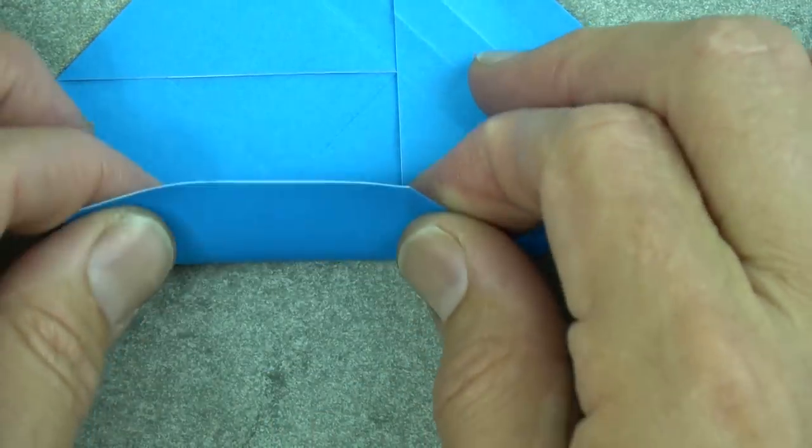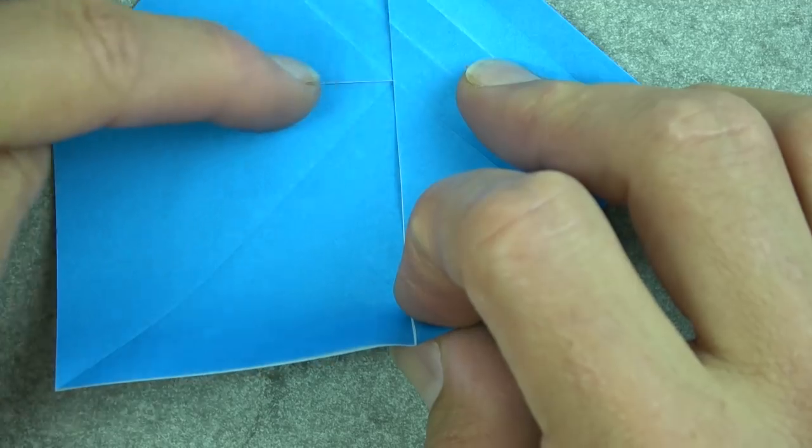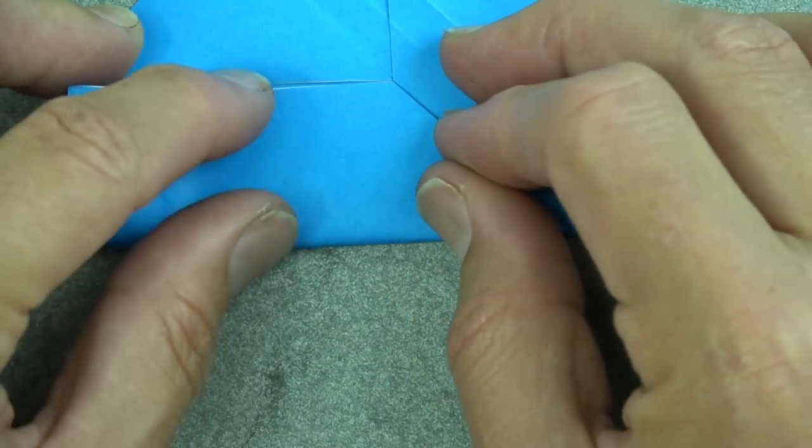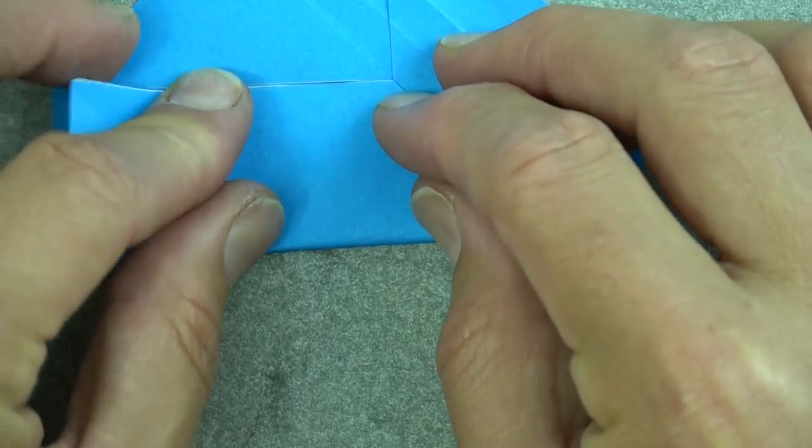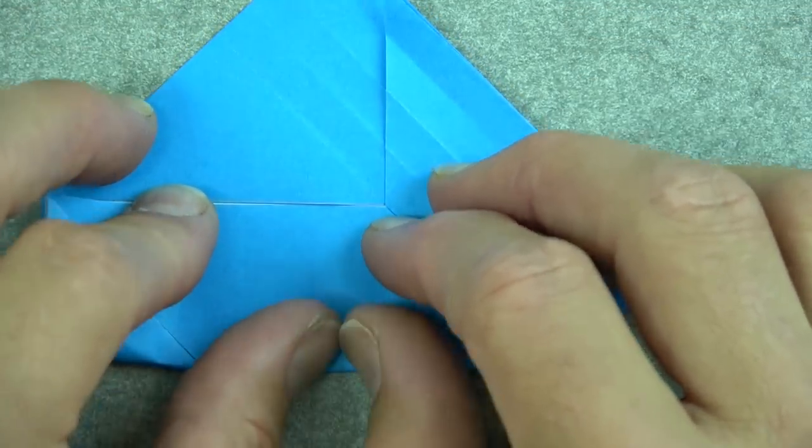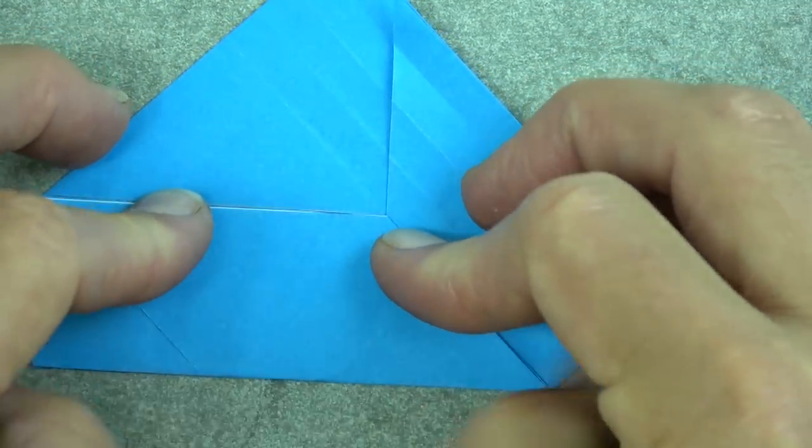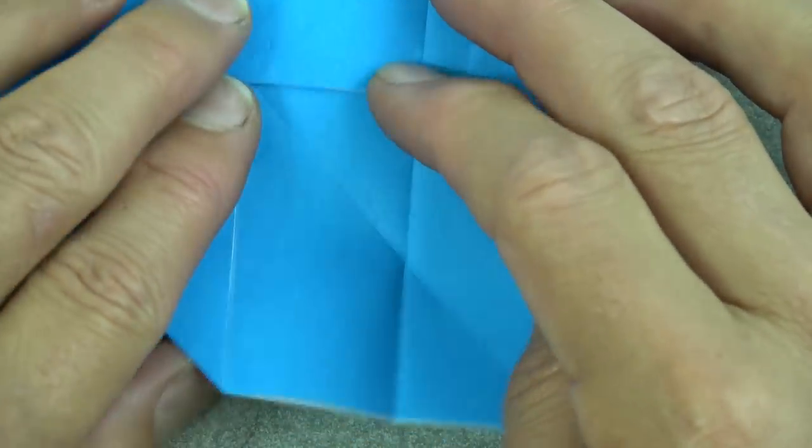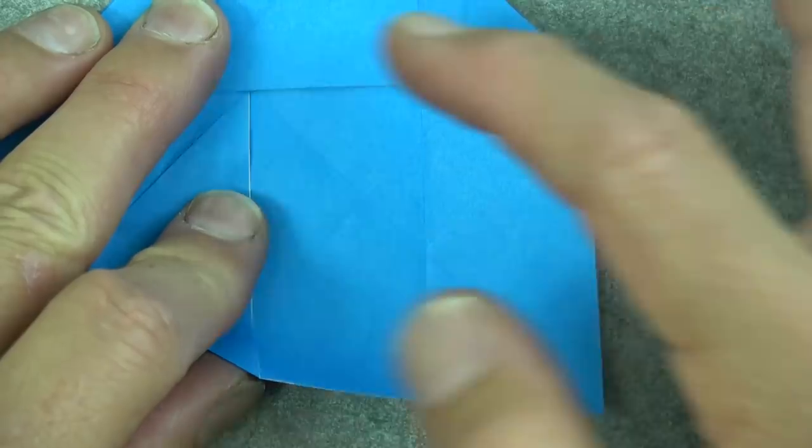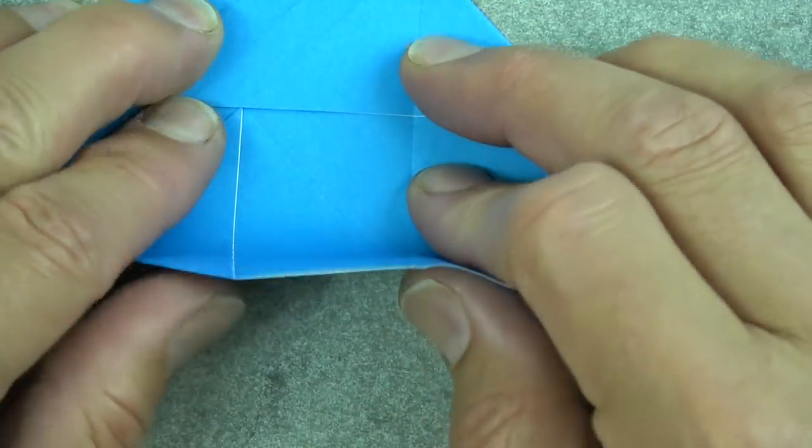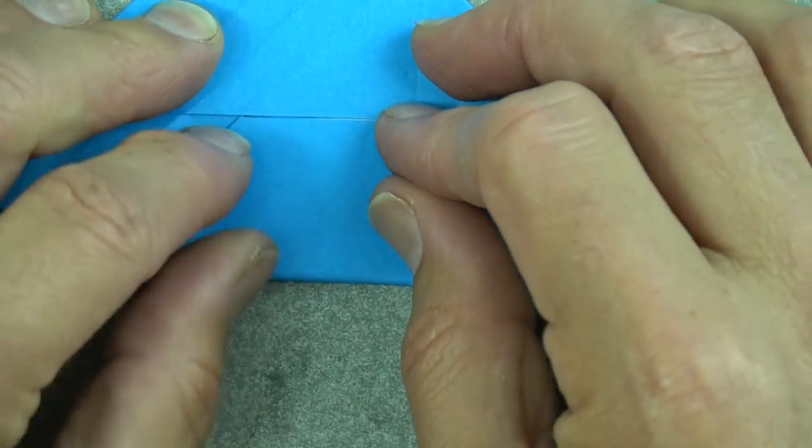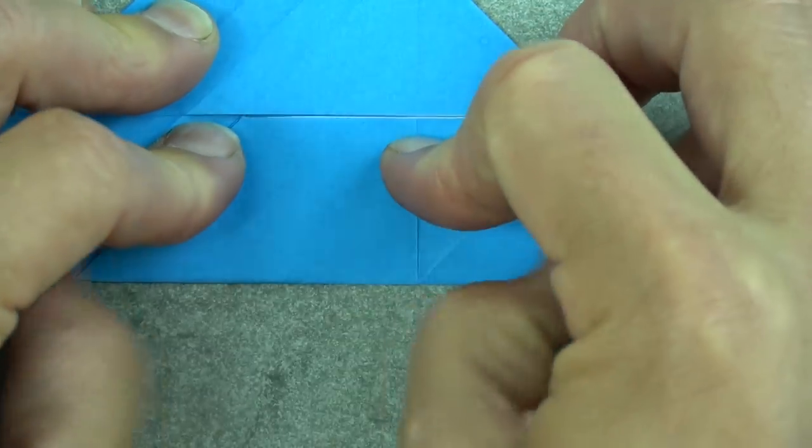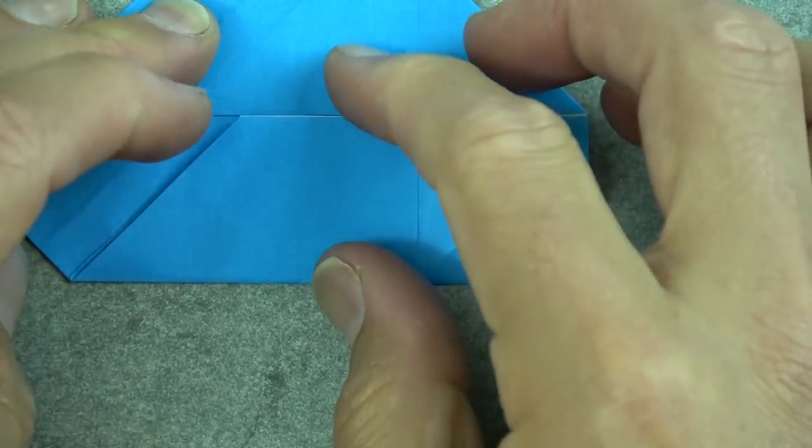And now rotate and fold this flap up so that this edge touches this edge, and hold the layers down so that they don't slide. And rotate. And now repeat on this side. Fold this edge to here. Hold the layers down. And unfold.